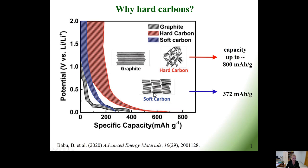Artificial graphites are usually produced by graphitization of coke, which are called soft carbons. In contrast to soft carbons, non-graphitizing hard carbons exhibit a wide plateau on the charge-discharge profile, providing much higher capacity related generally with the micro and mesoporous structure.